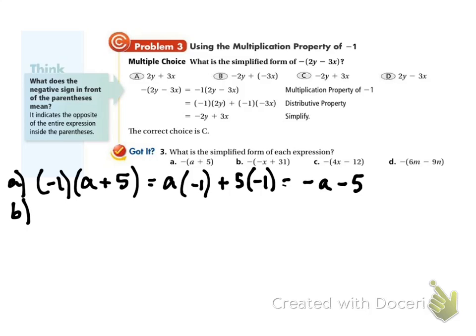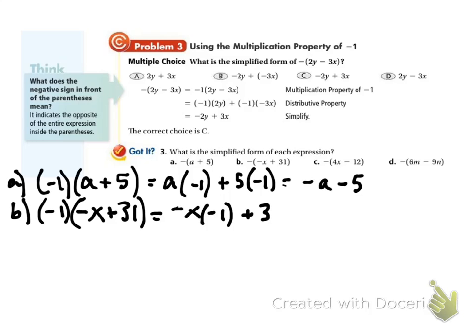Problem b: change it into a negative 1 out front times (negative x plus 31). Distribute that negative 1: negative x times negative 1 gives me a positive x, and 31 times negative 1 gives me negative 31. So I get x minus 31.